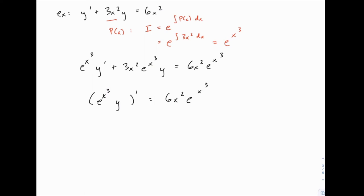Now we integrate both sides. The left-hand side just drops off the derivative, and then on the right side we have the integral of 6x squared e to the x cubed. That integral looks worse than it is.